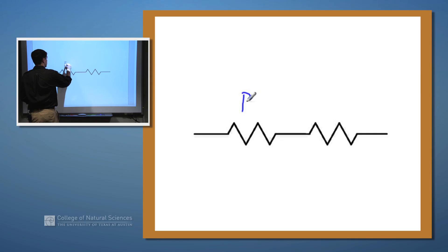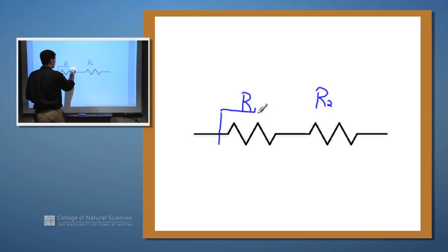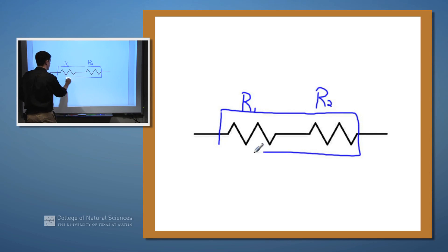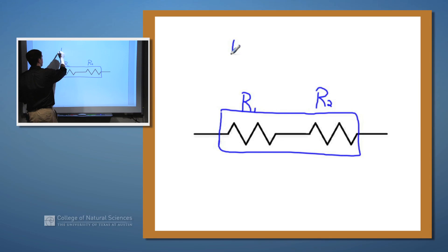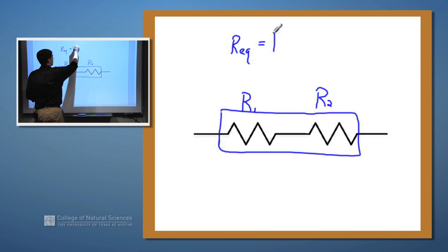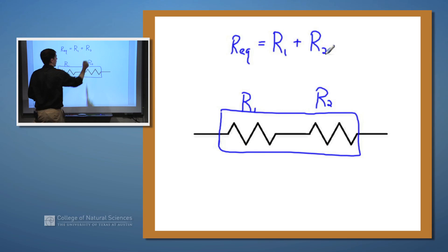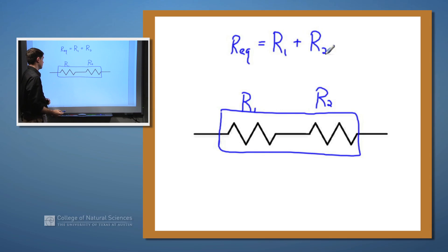If we have two resistors, R1 and R2, and we want to know what the equivalent resistance is — so if we were to replace these two resistors with one resistor called REQ, the equivalent resistance for resistors in series is R1 plus R2. We just add the two resistances together. Very simple, very straightforward.